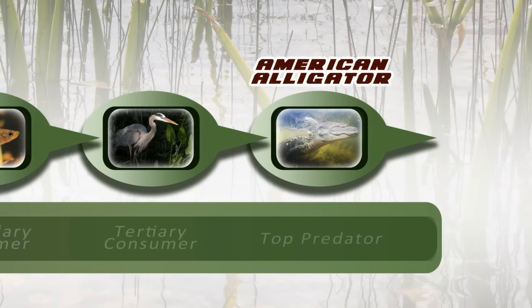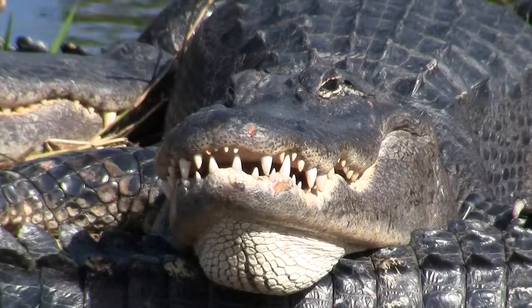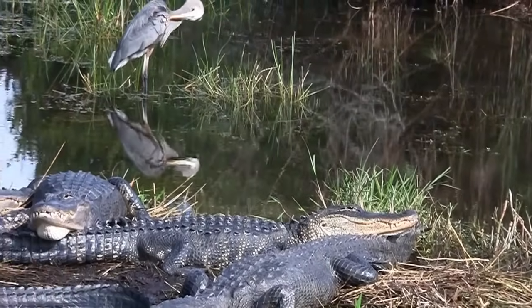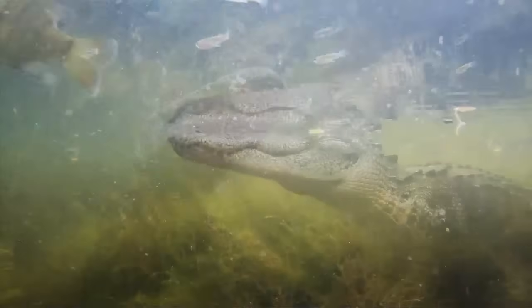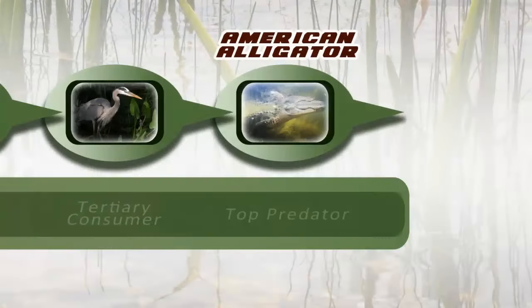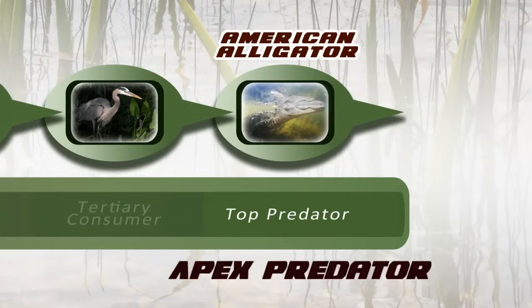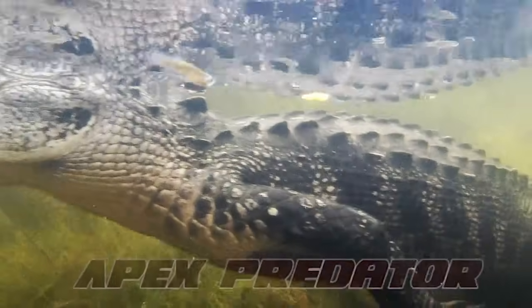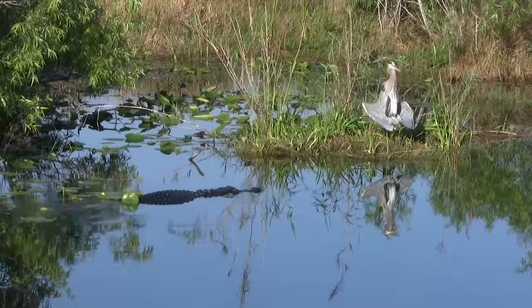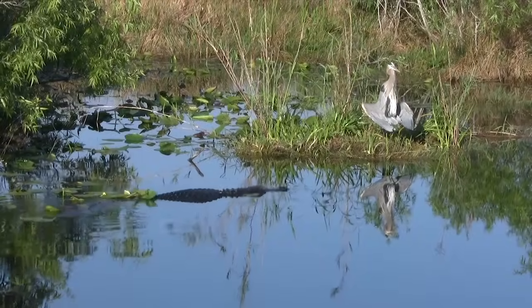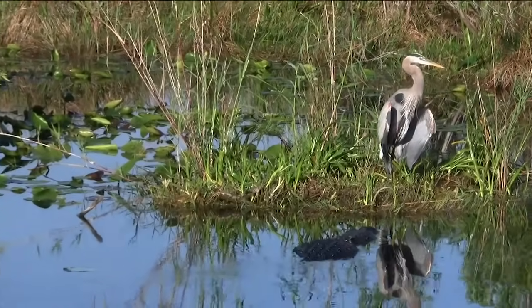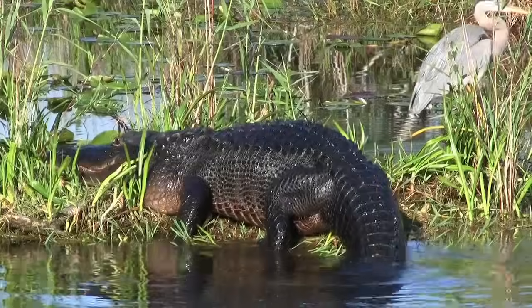Now for the big guy. The American alligator is a formidable beast. As a fully grown adult, he's way at the top of the food chain. He's what we call a top predator, also known as an apex predator. For the gator, an unobservant Great Blue Heron would be gourmet dining. This guy is aware of the danger — time to go sunbathe elsewhere.